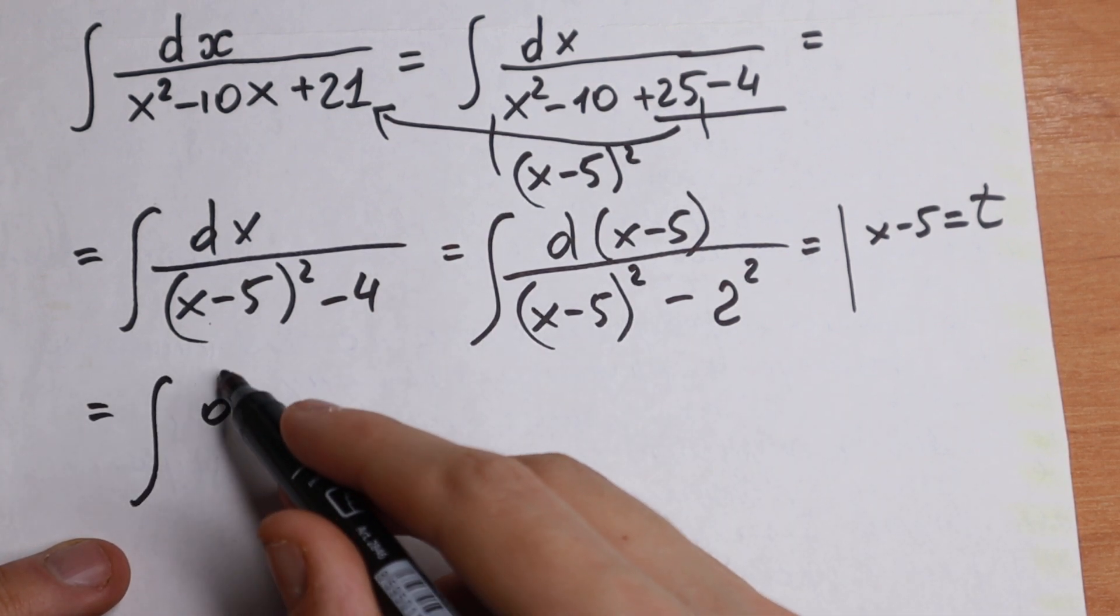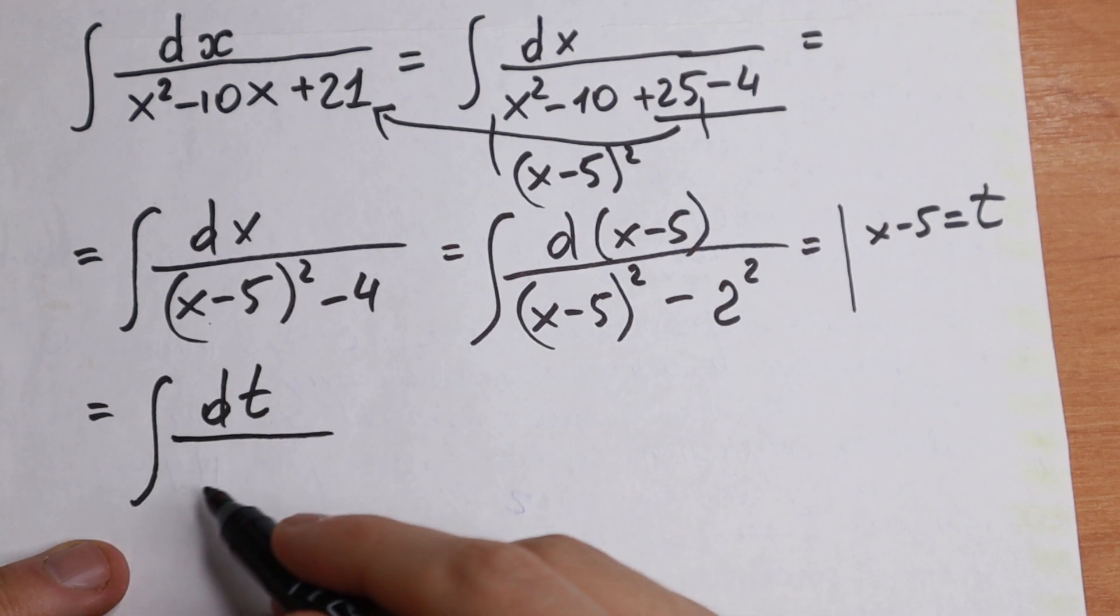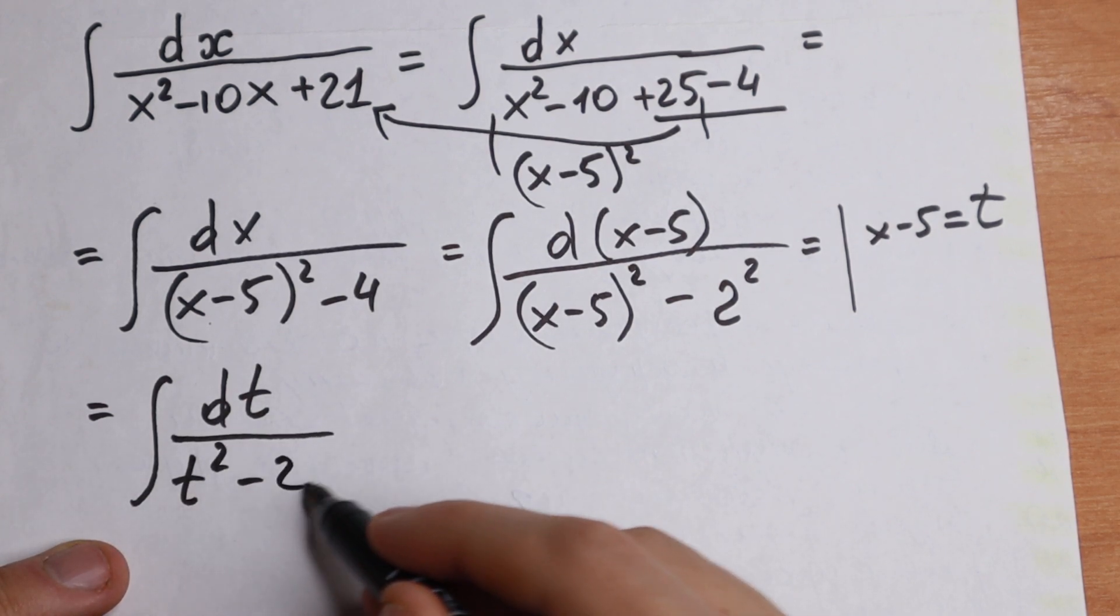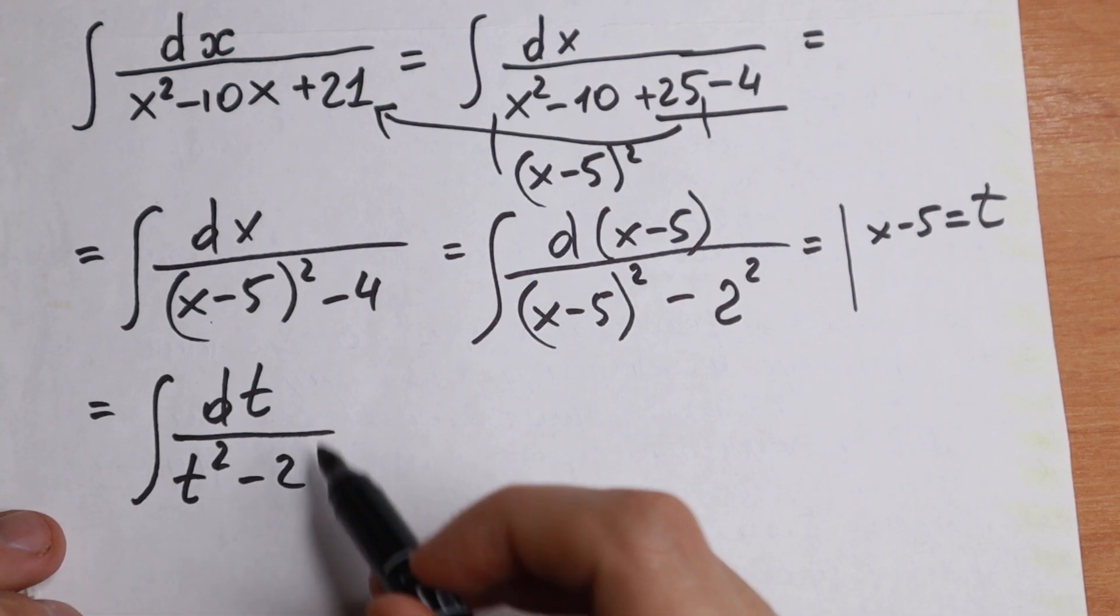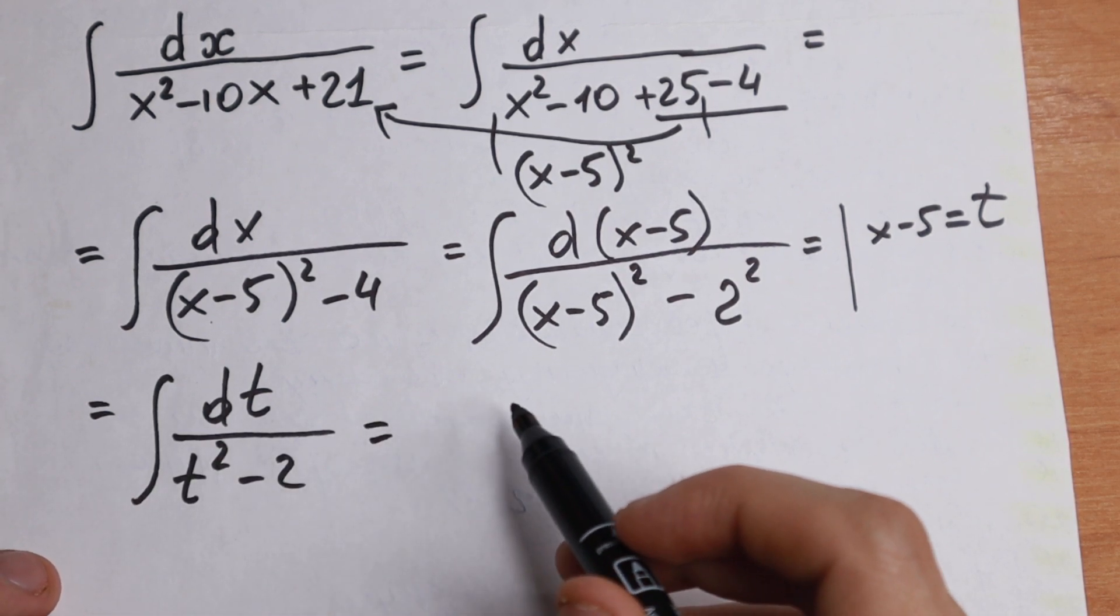We can rewrite it as integral dt over t square minus 2. And take a look. This is our table case, this is our natural log case.